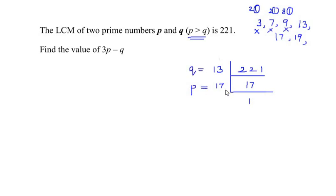Once we get the values of p and q, let us substitute in the equation. That is 3 times p, which is 17, minus q, which is 13. So we get 3 times 17 minus 13, which equals 51 minus 13, giving us 38. So the value of 3p minus q is 38.